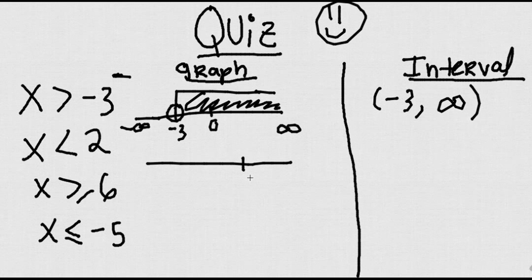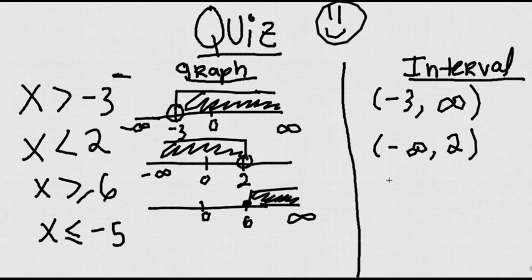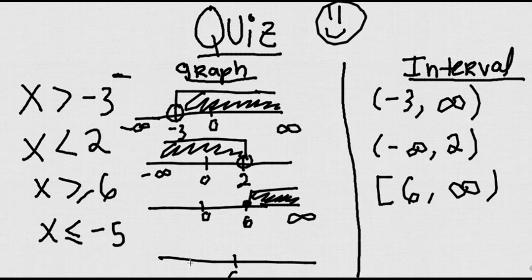Let's do the next one. x is less than 2. I'm going to put 2 here — you don't have to put the 0, this is just to show a reference. Then I put open and then I go to the left, and this guy is coming from negative infinitive and then he stops at 2. Now, x greater or equal than 6. I'm going to put my 6 here, but in this case I'm including it. So I'm going to put a dot and then I go to the right, all the way to the positive infinitive. So bracket, 6, infinitive. And the final one — x is less than or equal to negative 5 — that means it's coming from negative infinitive and then it stops on negative 5 with a bracket.